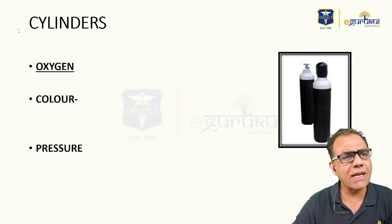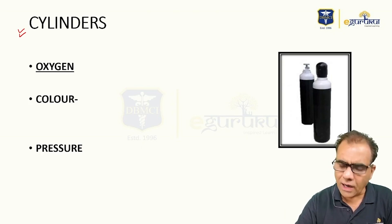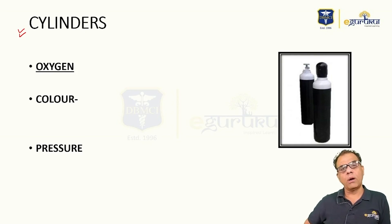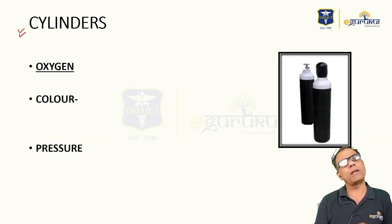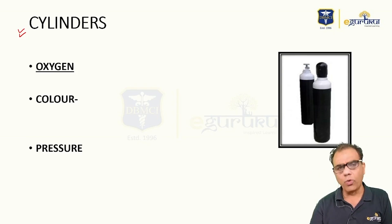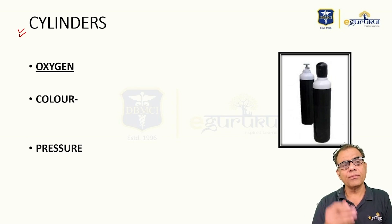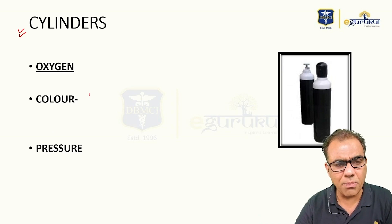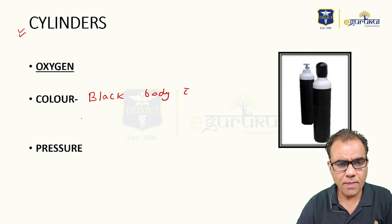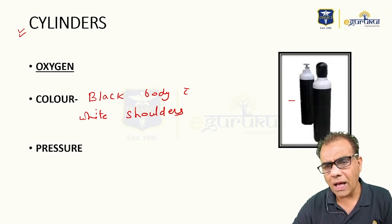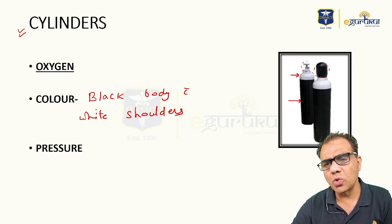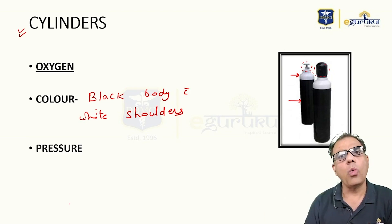Sources of gases can be cylinders. Regarding cylinders, two most important things you have to remember: one is the color of the cylinder and second is the pressure. Color is not only important from a questions point of view, it is also very important from a clinical point of view, because only if you know the color can you identify a cylinder. The color of the oxygen cylinder is black body with white shoulders — black body with white top — and this cover is just to protect the valve so that dust does not enter. So: black body with white shoulders.